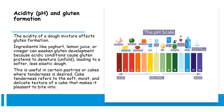The acidity of a dough mixture affects gluten formation. Ingredients like yoghurt, lemon juice, or vinegar can weaken gluten development because acidic conditions cause gluten proteins to denature — to unfold. This leads to a softer, less elastic dough, which is useful in certain pastries or cakes where tenderness is desired. Cake tenderness refers to the soft, moist, and delicate texture of a cake that makes it pleasant to bite into.